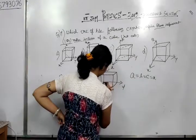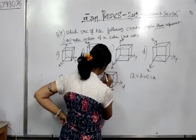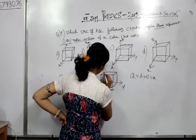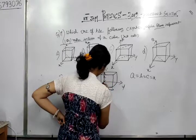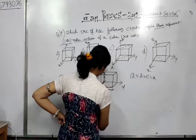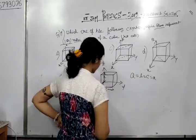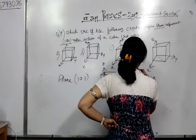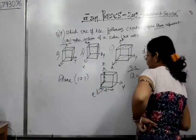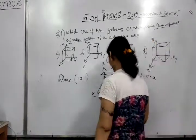So I have written this, this is c, this side is c, and this side is a. So for simple cubic, a equals to b equals to c equals to a, here.